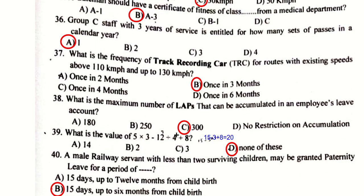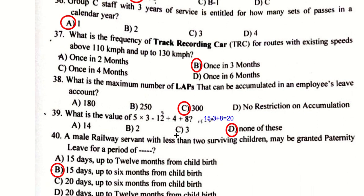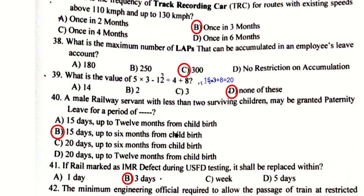The frequency of TRC for routes with existing speed above 110 kmph and up to 130 kmph is once in three months. The maximum number of leave that can be accumulated in an employee's leave account is 300. The value of 5 × 3 − 12 divided by 4 plus 8 — the right answer is 20, so D (none of these) is the answer.